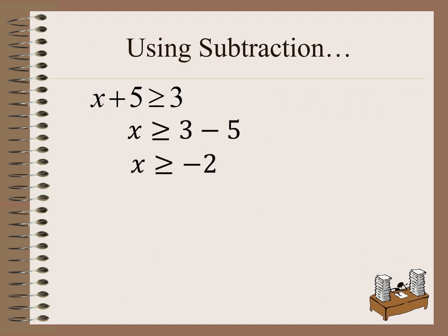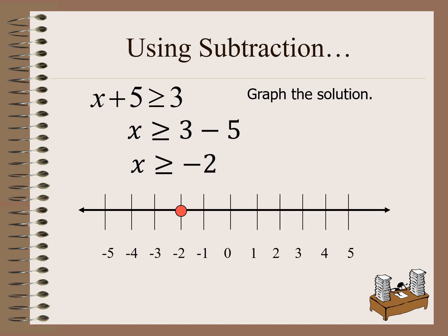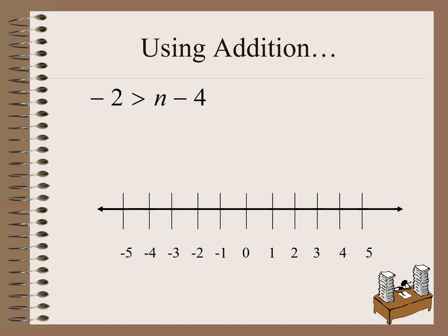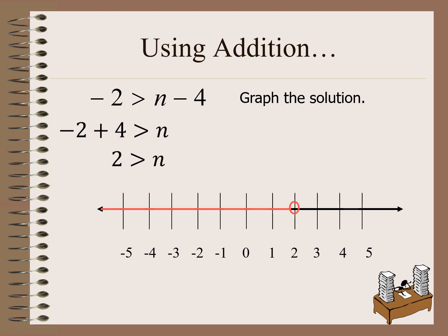Another example using subtraction: if we have x plus 5 greater than or equal to 3, we subtract 5 from both sides. On the right side, 3 minus 5 is negative 2. Graphing the solution: we have negative 2 with a closed dot because of the presence of equal to, and the direction is to the right because it is greater than. Using addition: if we have negative 2 greater than n minus 4, adding 4 gives us n is less than 2, so we use an open dot and the direction is to the left.